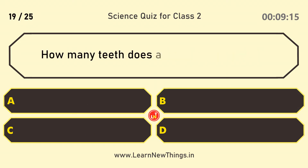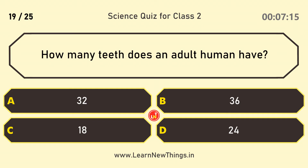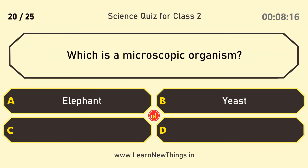How many teeth does an adult human have? 32. Which is a microscopic organism? Yeast.